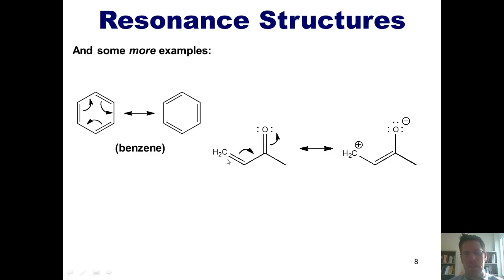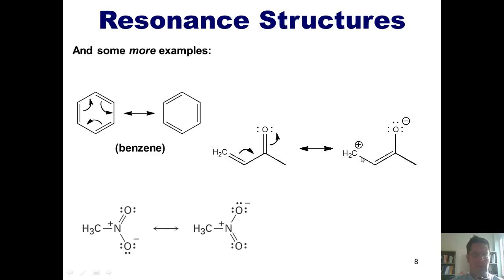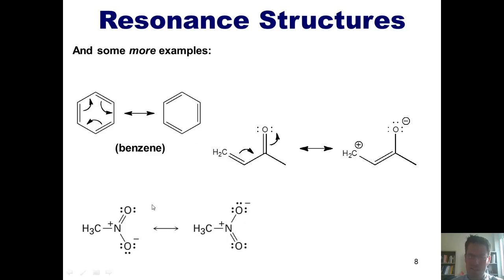Doing so gives a negative charge on the oxygen. The carbon over here that formerly had eight electrons around it now only has six, and therefore gets a positive charge. I can, of course, go in reverse by having these electrons come back down to close and give me a carbon-oxygen double bond while pushing these two electrons back out to their original position.